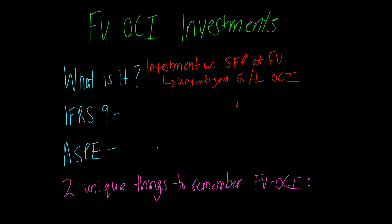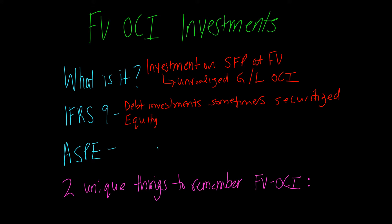What does IFRS 9 say about the fair value OCI model? IFRS 9 says that debt investments that are sometimes held and sometimes sold or securitized should be designated as fair value OCI. And equity investments can also be recorded as fair value OCI through one irrevocable election. So that's what public companies need to abide by.